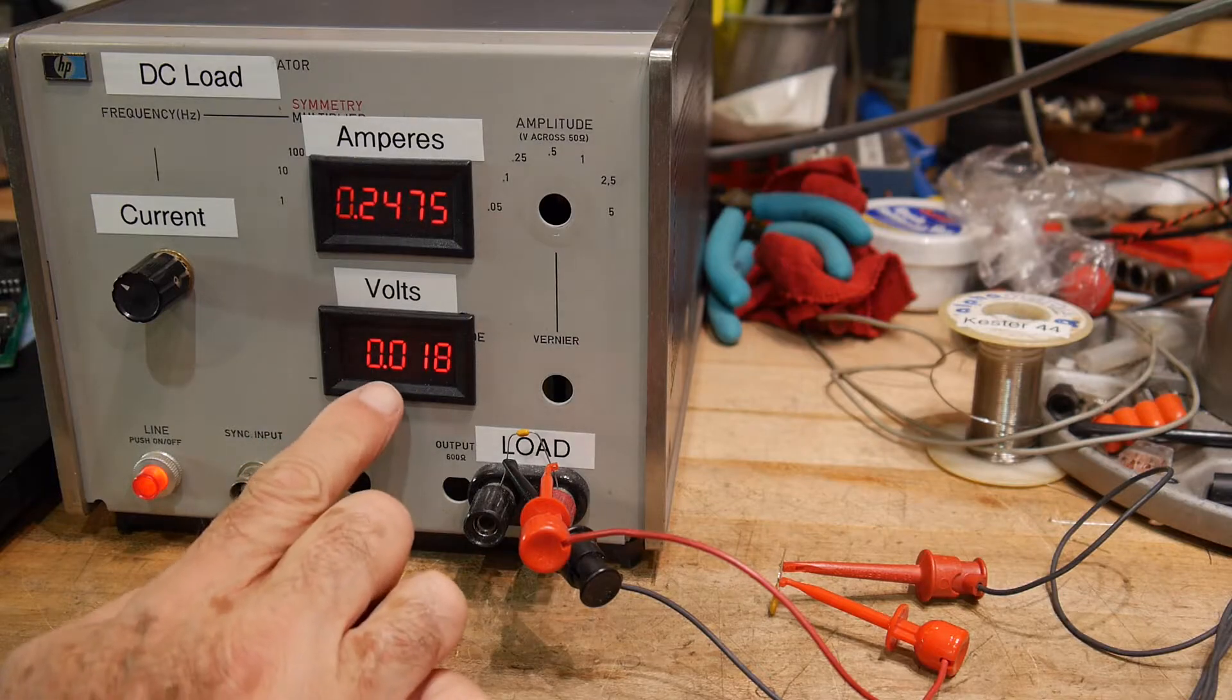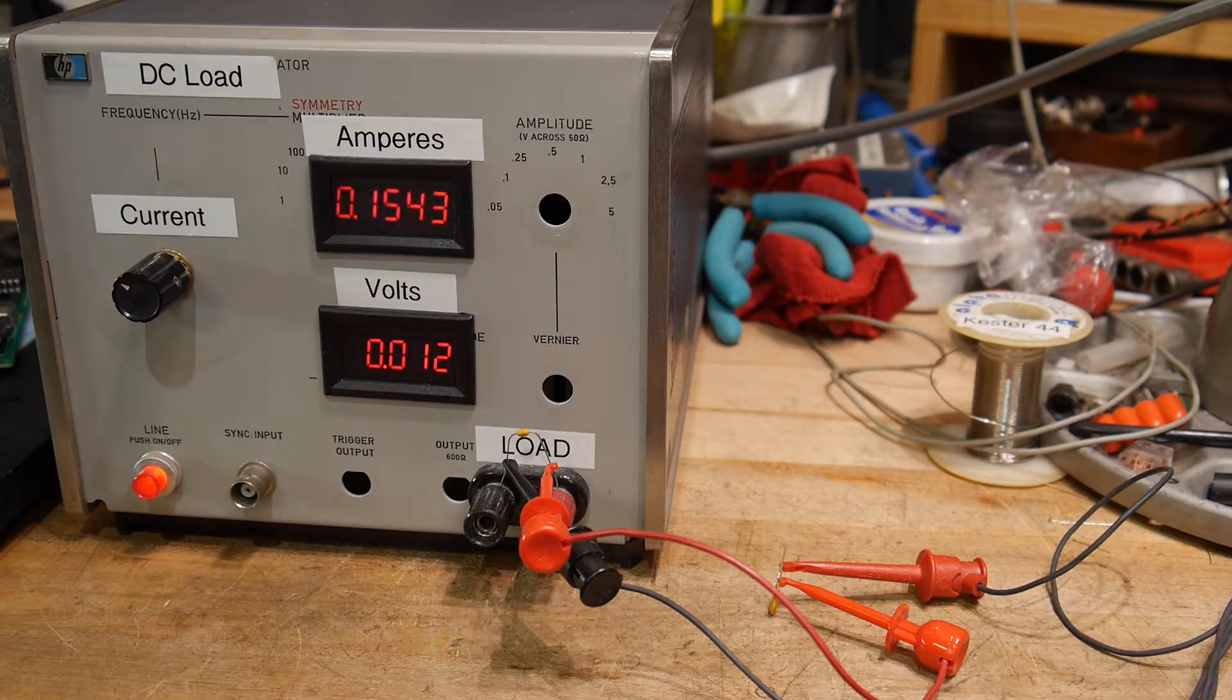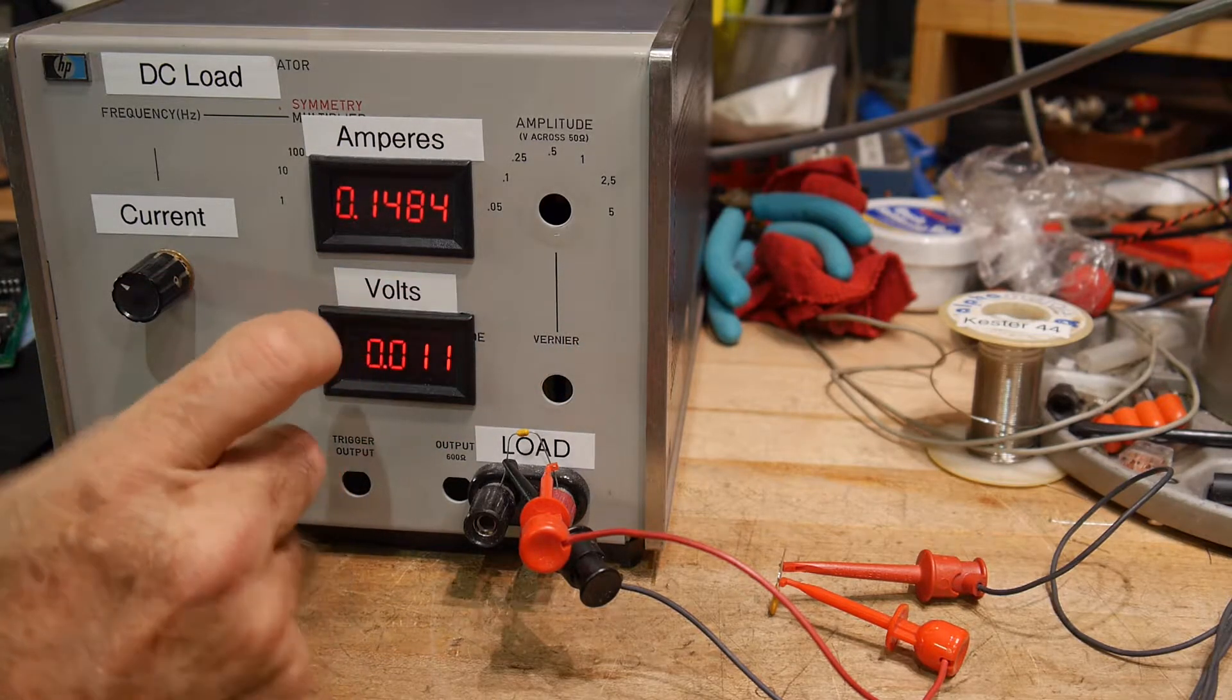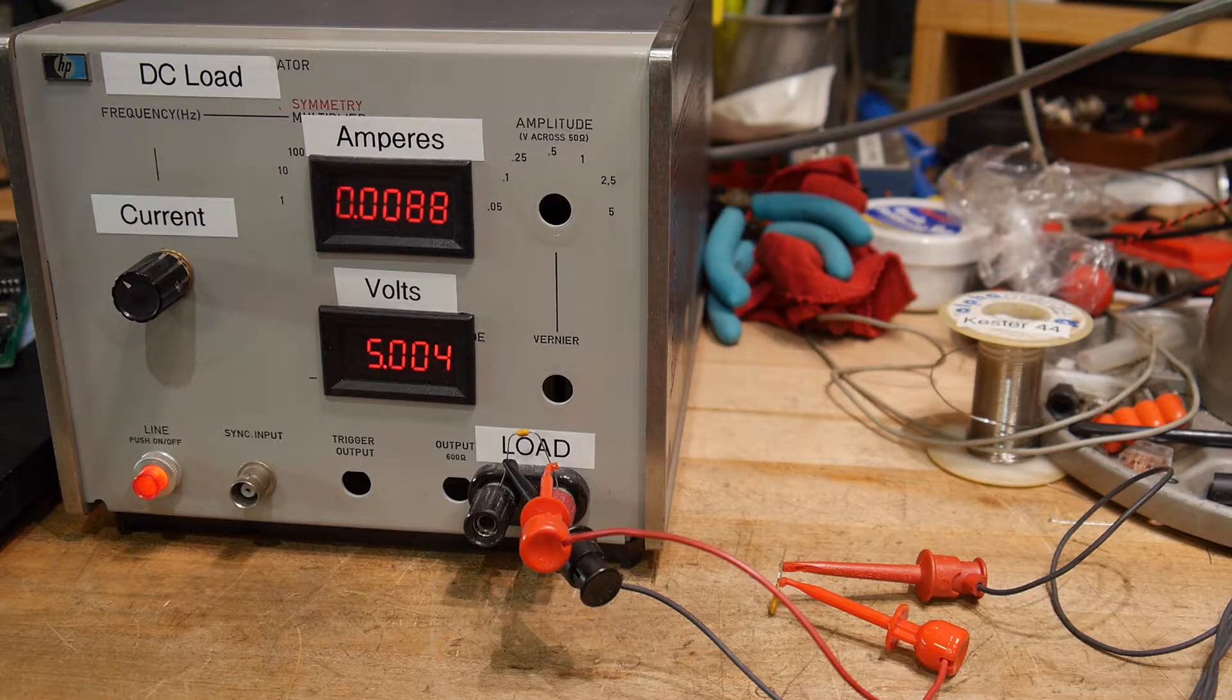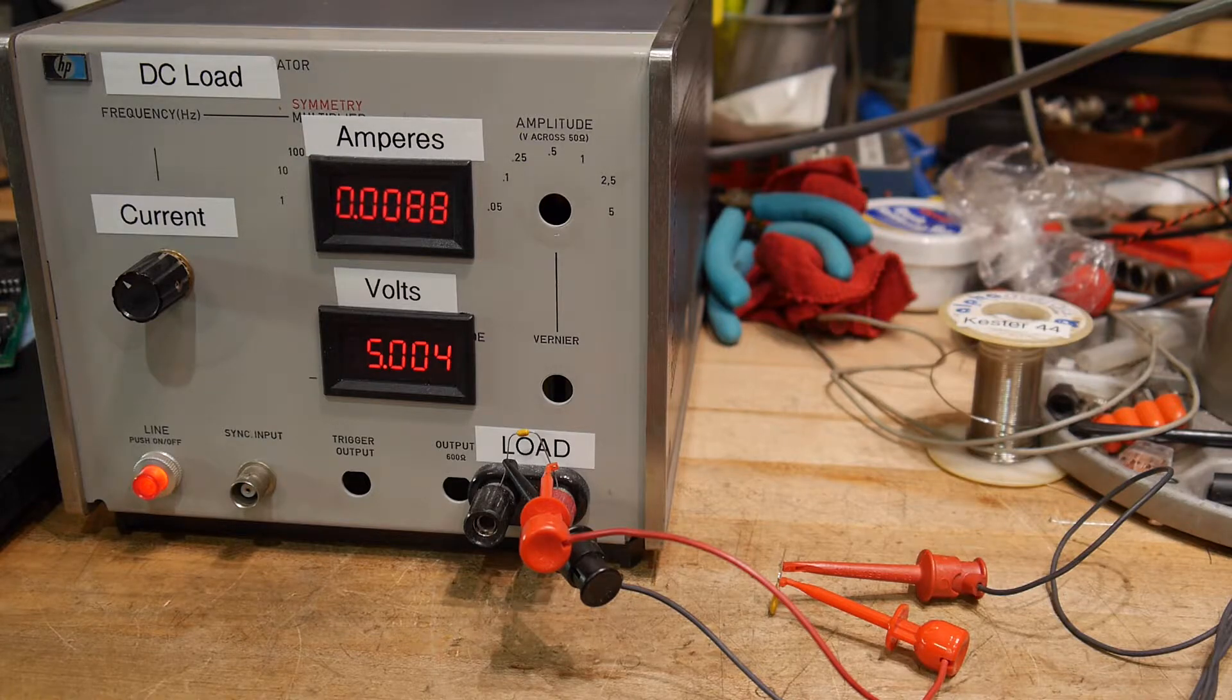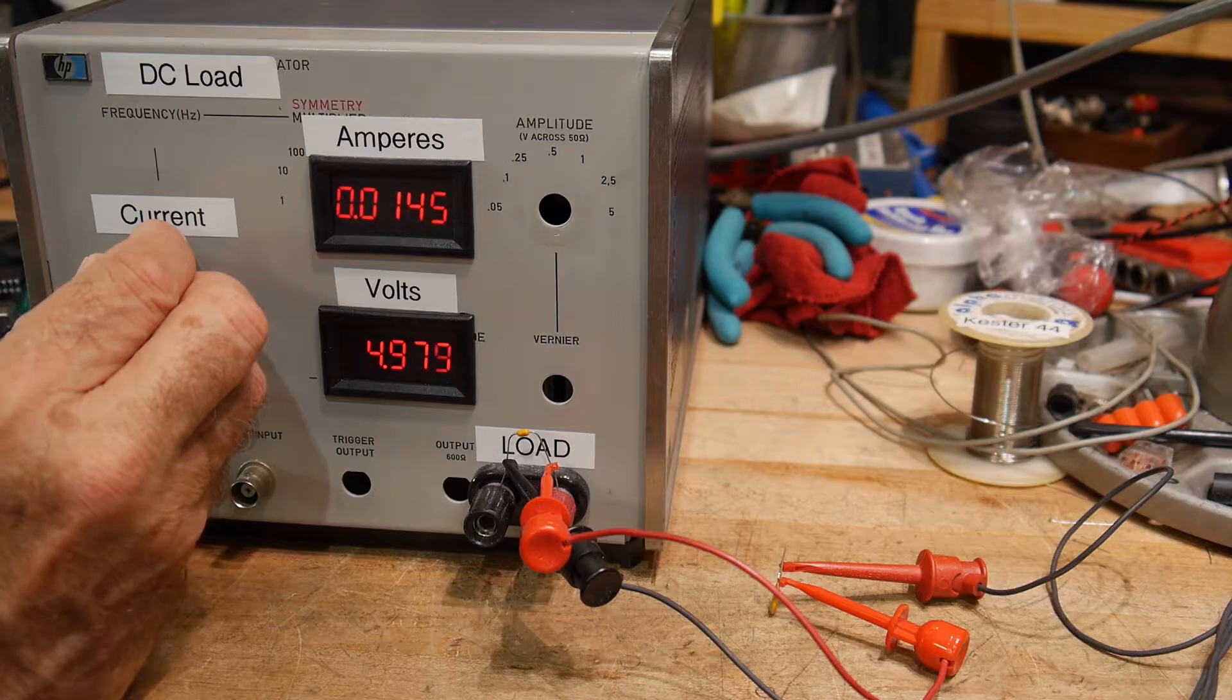Yep, there we go. It finally cut out. So I think that's probably how it works. If it's just slightly above that 500 milliamp spot, then it'll slowly... it's kind of a power thing, right? It's the amount of energy that's in there. So if you're just a little bit over it heats up slowly. Probably if you're double the current, it pops pretty quick.